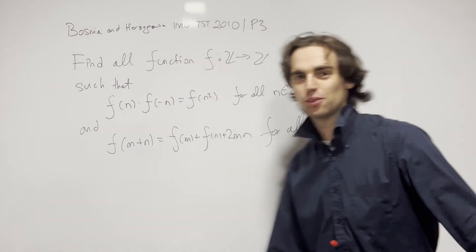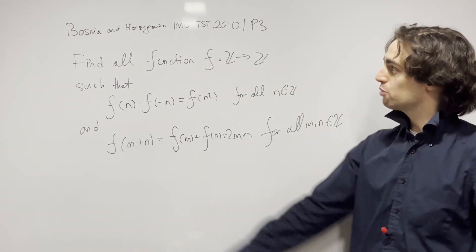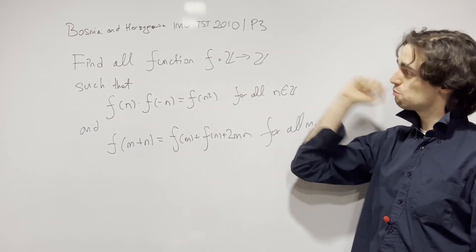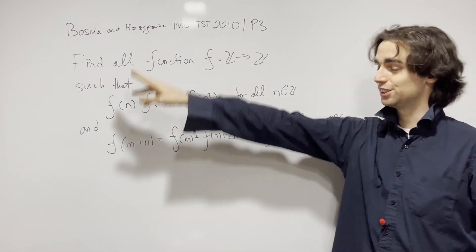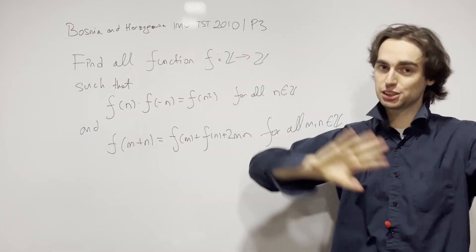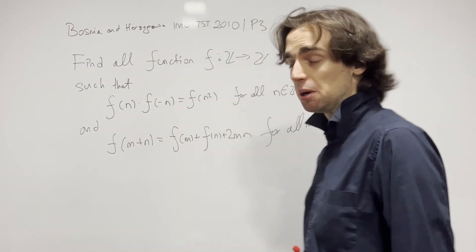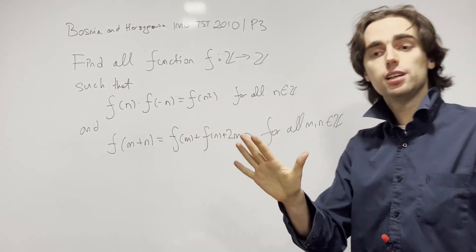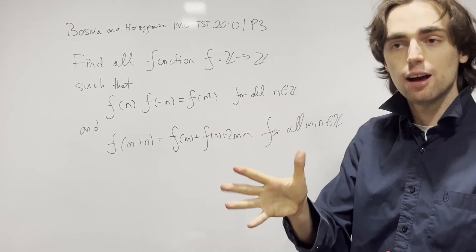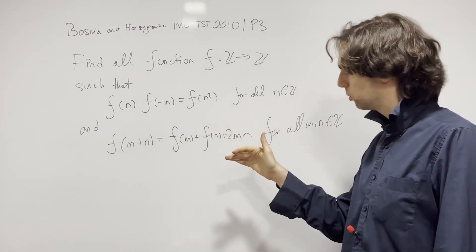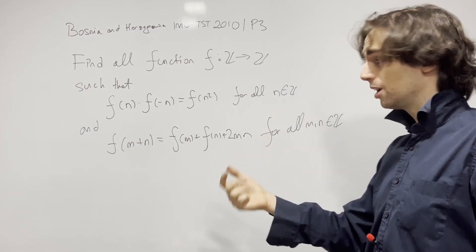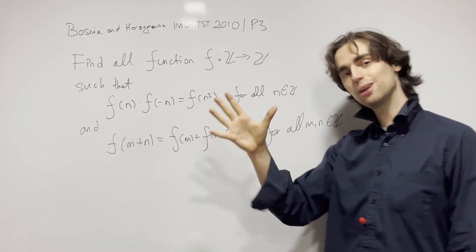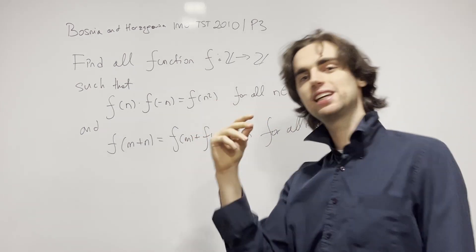Hello fellow problem solvers! We'll be doing a problem from the Wozniak-Govna team selection test 2010, problem number three. I suggest you try this nice functional equation out — a minimum of 20 minutes, ideally 40 minutes to an hour and a half, not more than two hours. And now without further ado, let's begin!